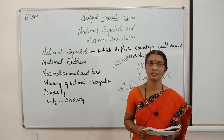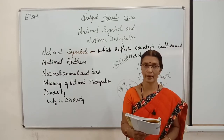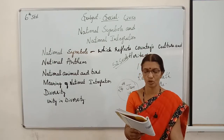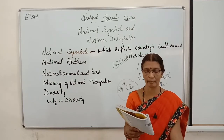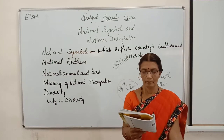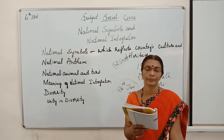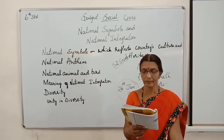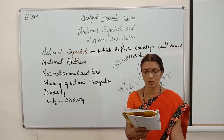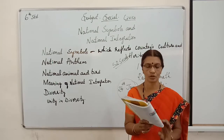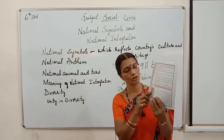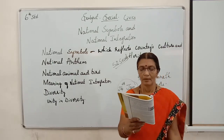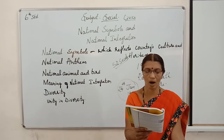Next, let us look at our National Emblem. Observe our national emblem. It is the true version of the base portion of the Ashoka pillar at Sarnath. The four-headed lion seen has been taken from the base part of the Ashoka pillar at Sarnath. At the base, lions are present — this is called the lion base. Four lions are there, though only three can be seen.